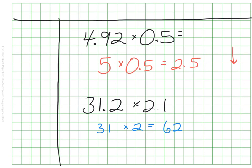How did we do? I rounded 31.2 to 31, and I rounded 2.1 just to 2. So I did 31 times 2, I got 62. I know my product should be in the ballpark of 62.